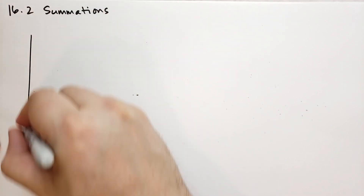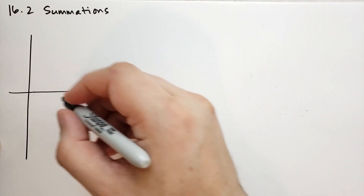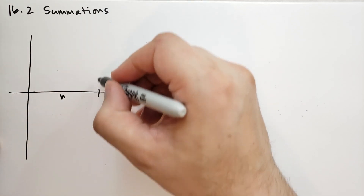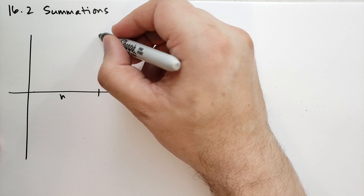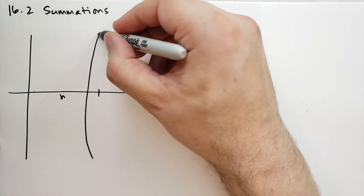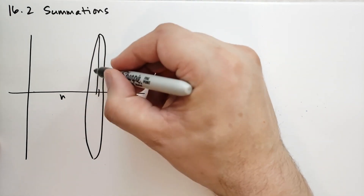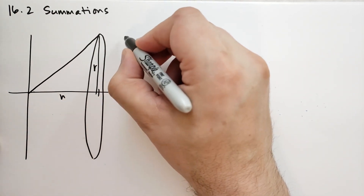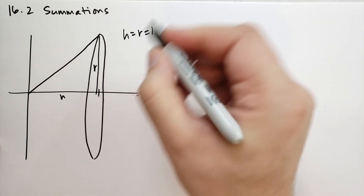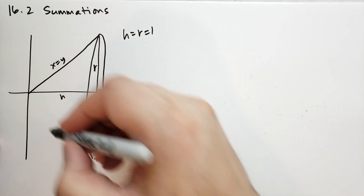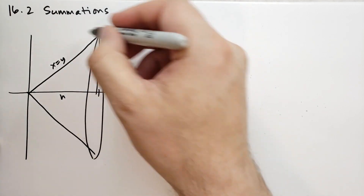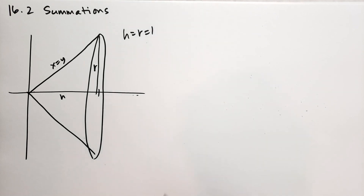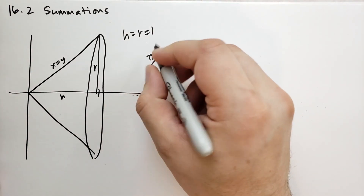A cone is defined as follows. We're going to have a distance from the x-axis that's the height of the cone, and then we're going to revolve the cone around a circle at the base. I'll try to draw an ellipse because you're looking at it at an angle, and then the line from here to here. We're going to take the height equal to the radius equal to one, so this curve here is x equals y. I'm going to revolve that curve x equals y around the x-axis. We're going to show that the volume of the cone is pi over 3.